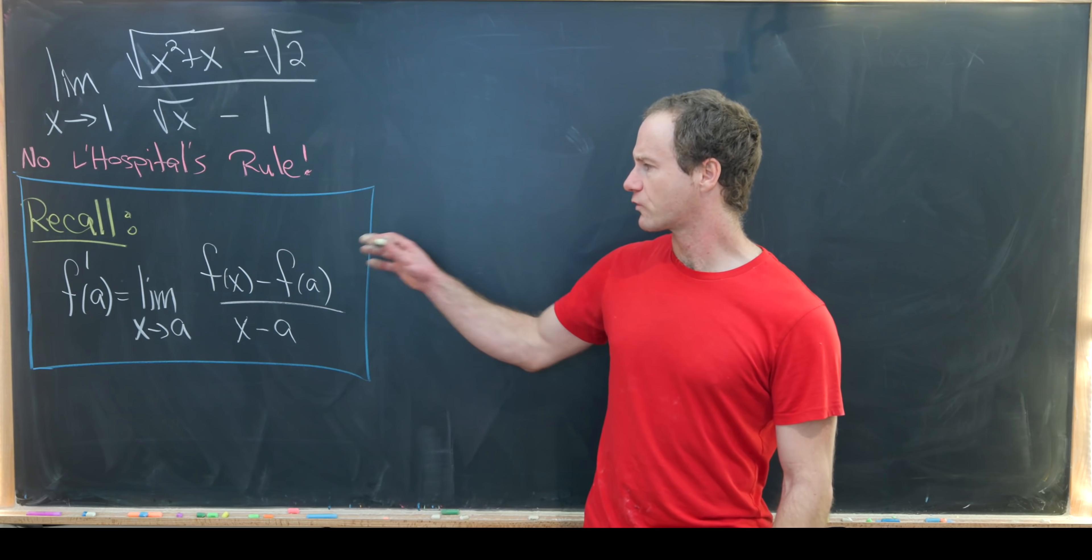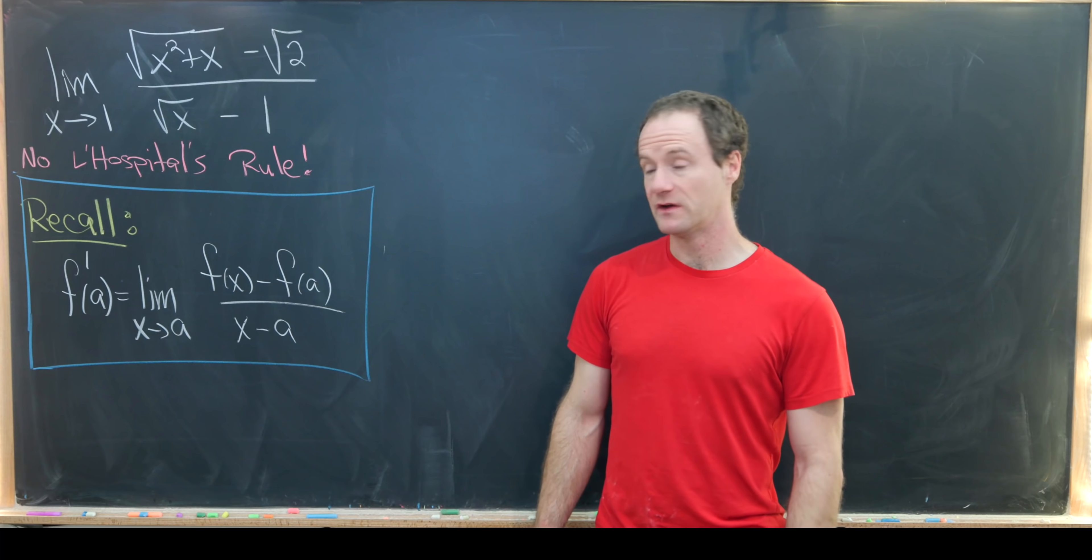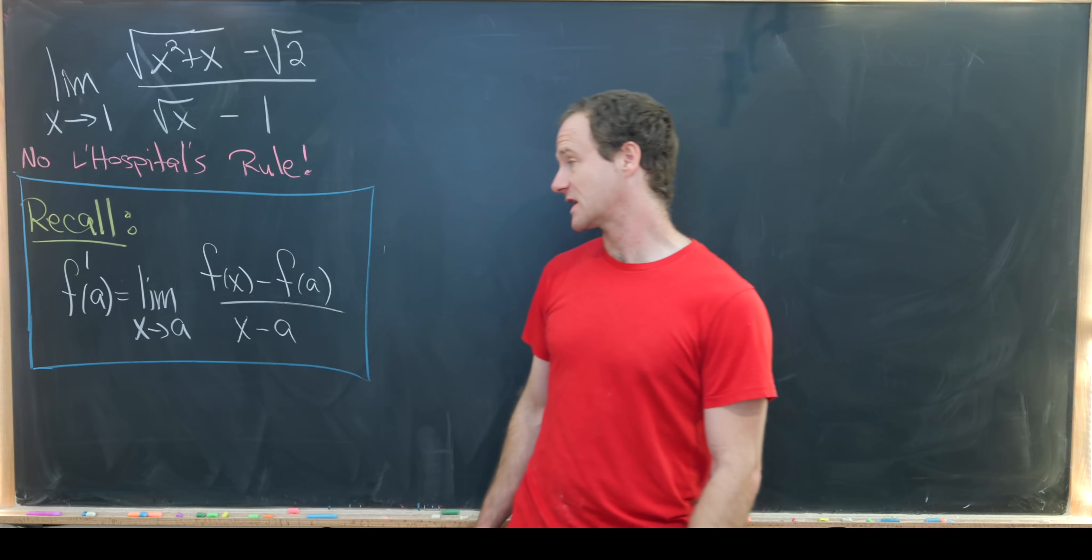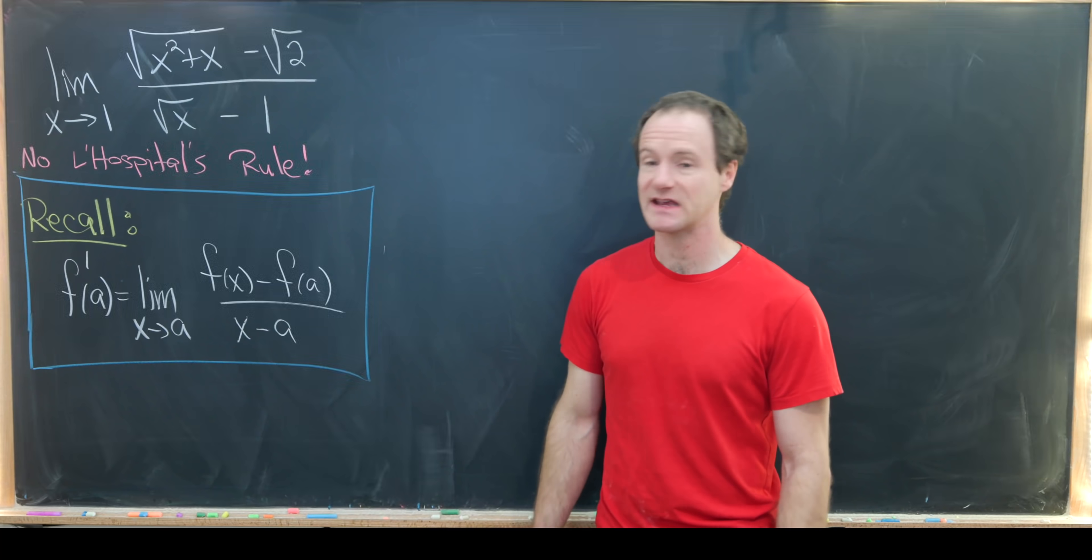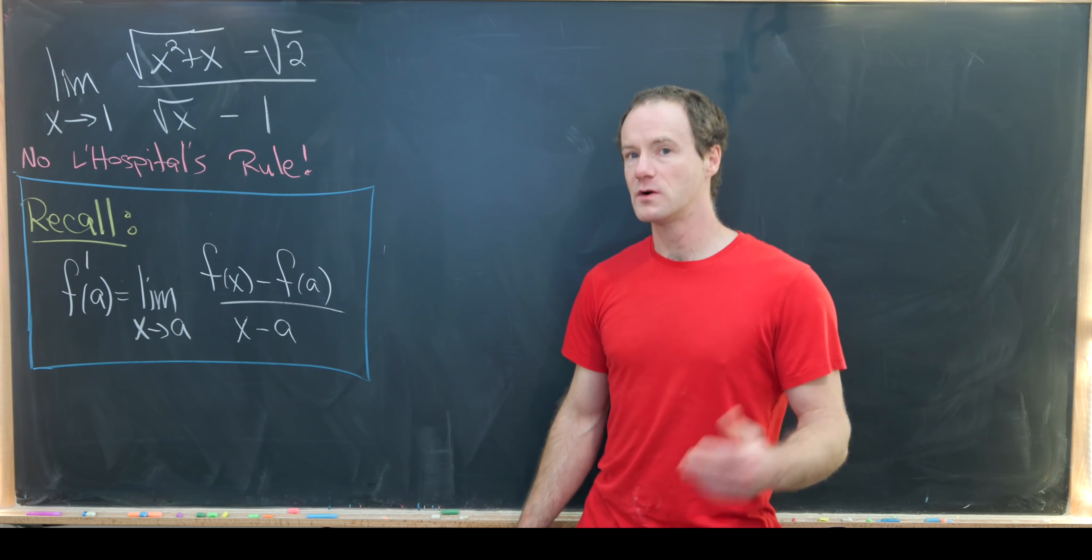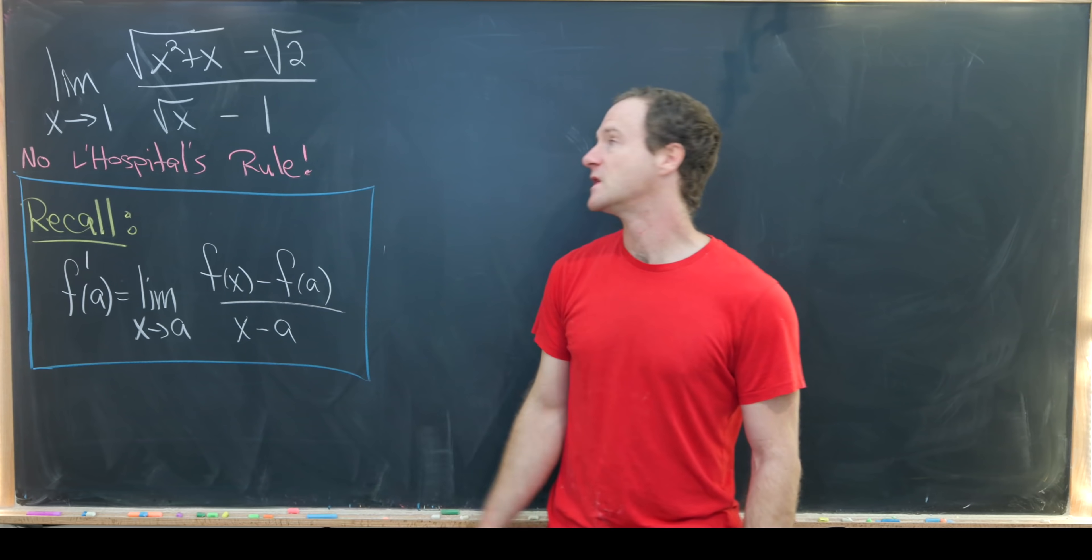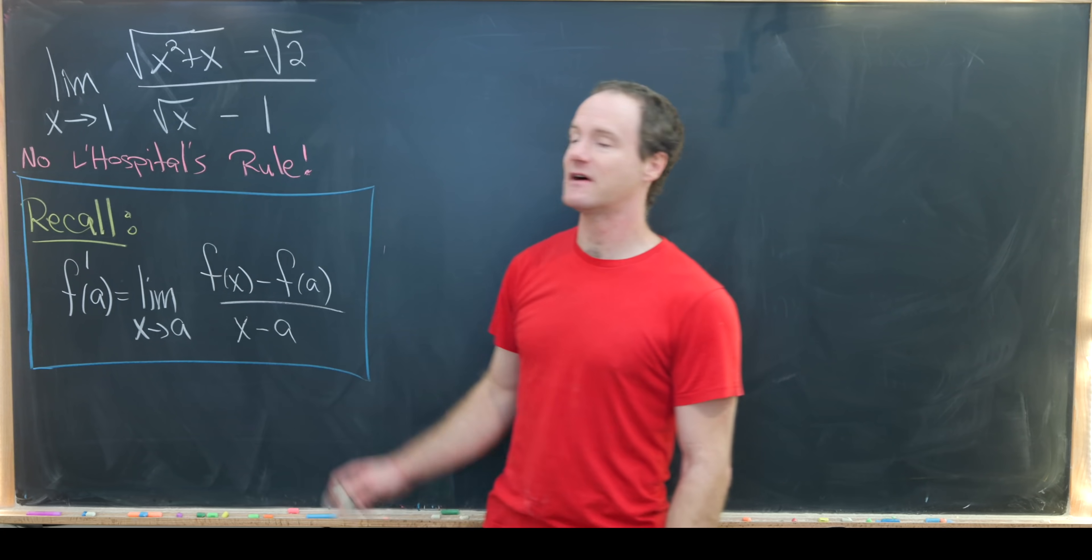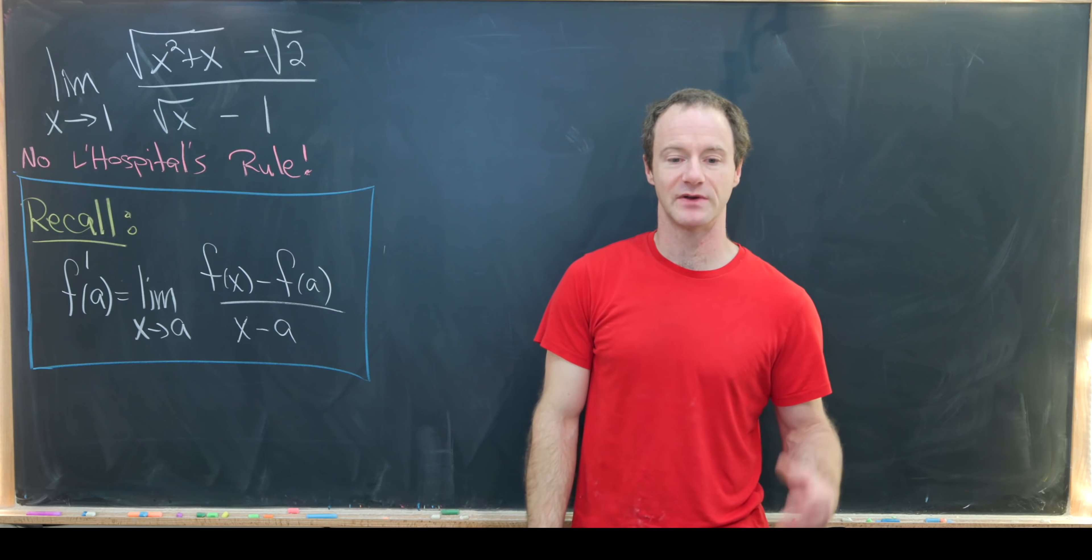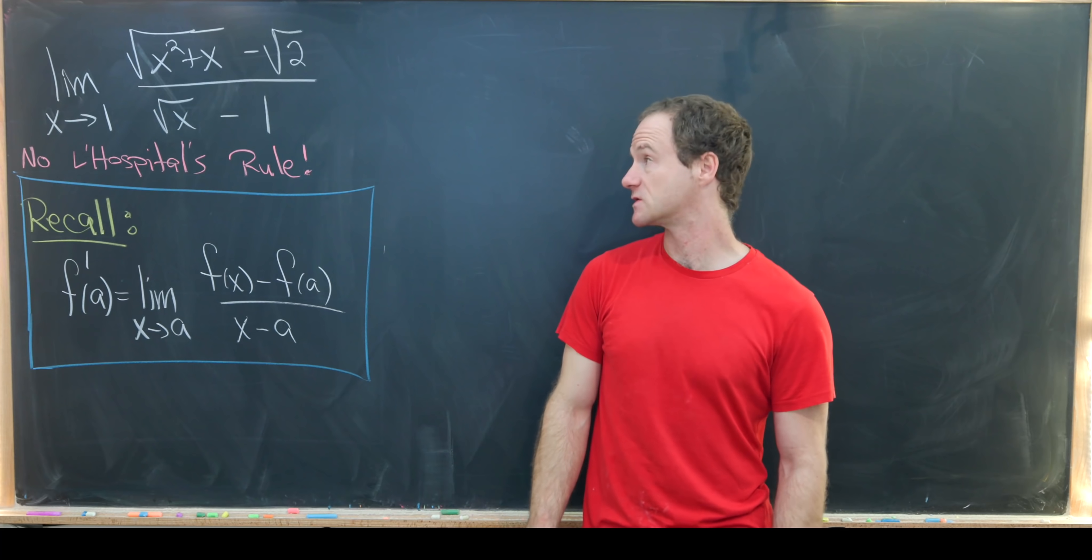Let's recall that we can define the derivative of a function f at a point a by the following limit: the limit as x goes to a of f of x minus f of a over x minus a. Now we almost have something like that. This looks like f of x minus f of 1 in the numerator. But we don't have x minus 1 in the denominator. We have the square root of x minus 1.